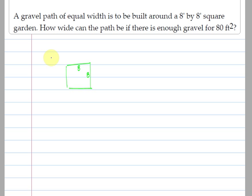Now I'm going to draw another square to represent the pathway around the garden. The unknown here is the width of the path, so I'm going to go ahead and label the width of the path as being x.